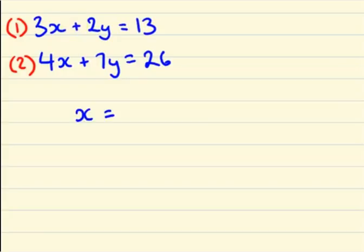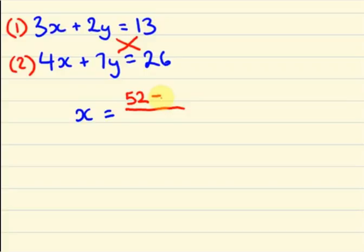So what I am going to do is, I am going to write x is equal to: I take the right-hand value 26 of my second equation multiplied by the y component of the first equation — that is 26 into 2 is 52 — and then subtract the right-hand value 13 of my first equation multiplied by the y component of the second equation 7, giving 13 into 7 is 91.